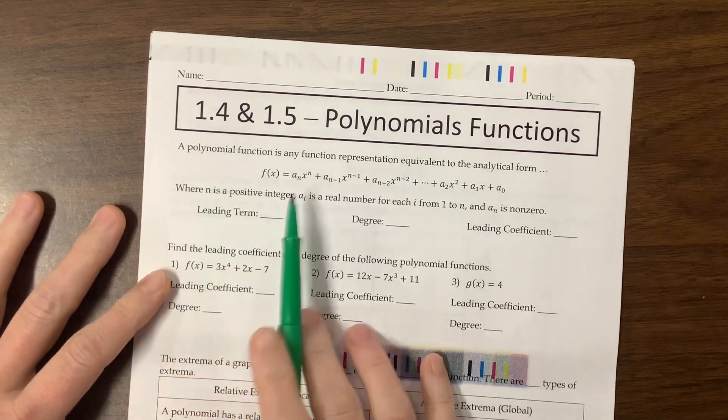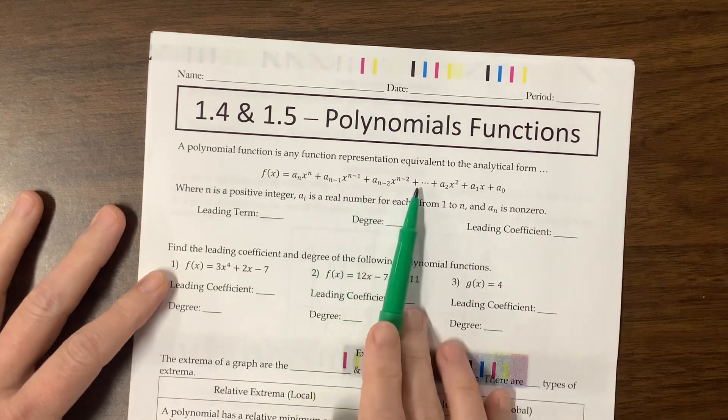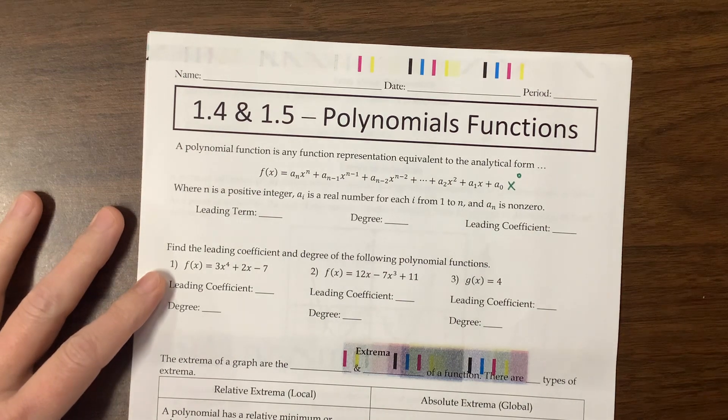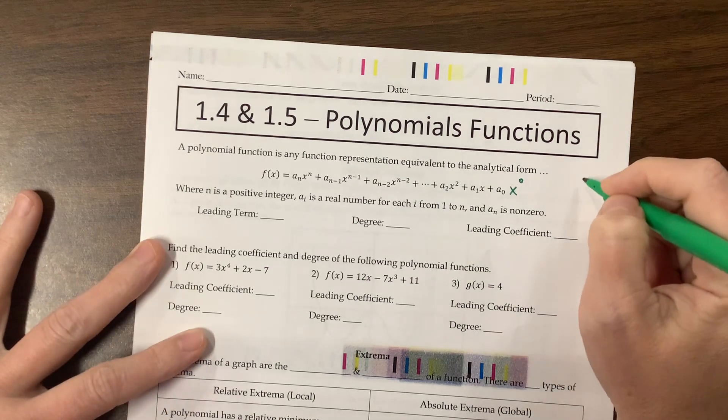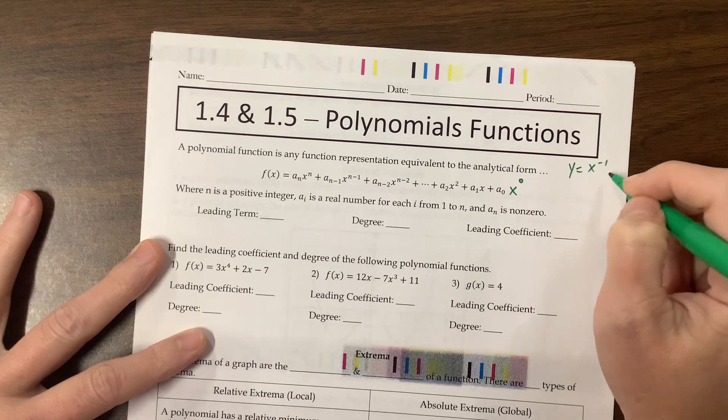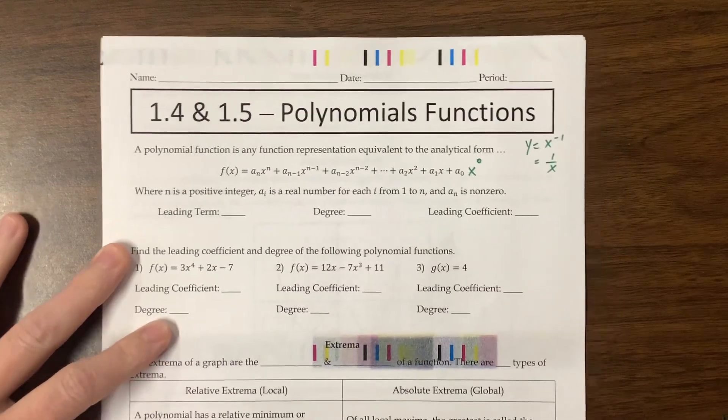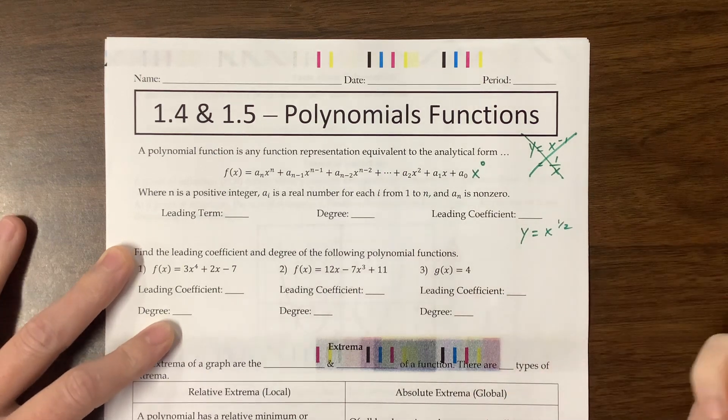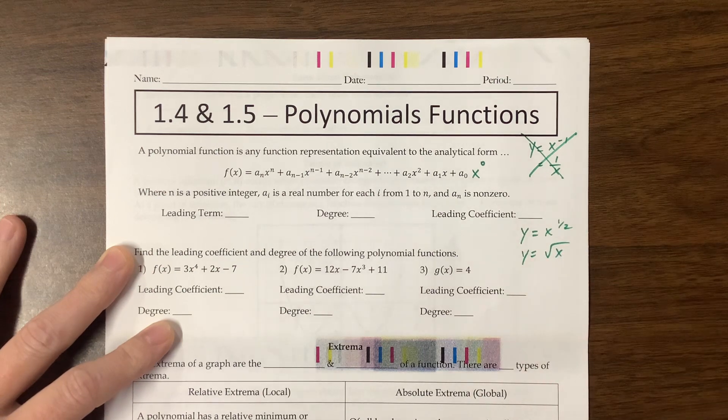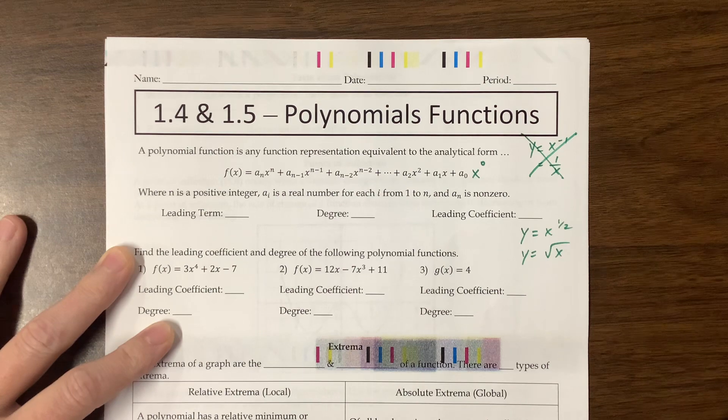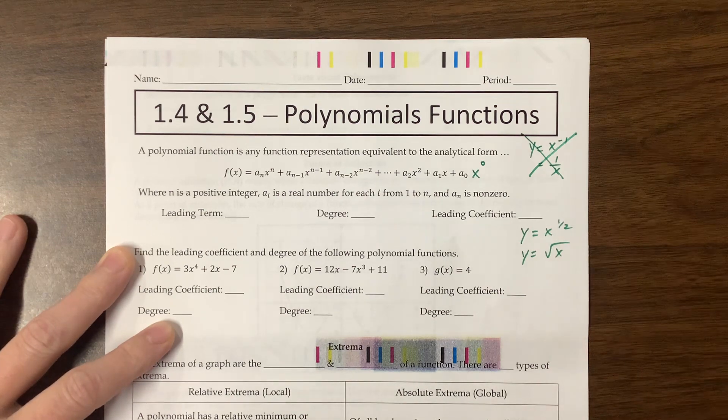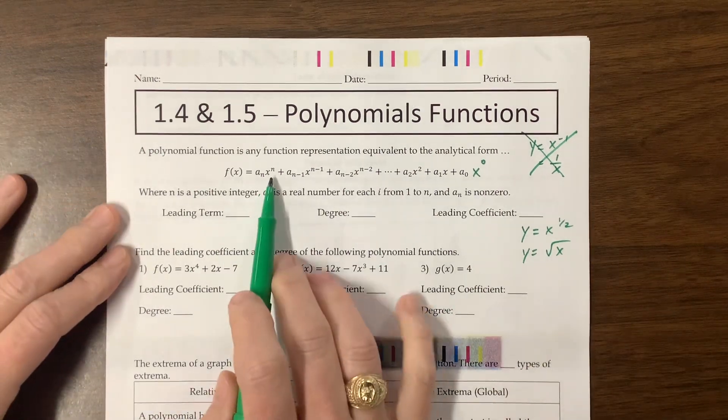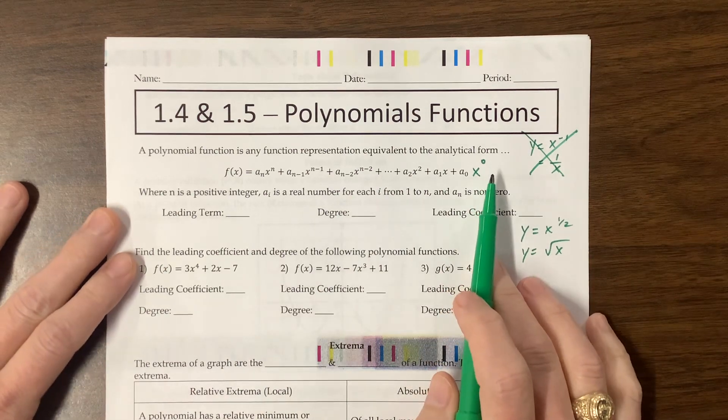So with this one, they're telling us a polynomial function. A function's a polynomial when we have x to different positive integer values, or actually this one would technically have x to the zero power, and that could be a polynomial. But we wouldn't have an x to a negative exponent, like if I said y equals x to the negative one, this is the same thing as one over x. This is a rational function, it's not a polynomial. We wouldn't have something like y equals x to the one half, for example. That is the square root of x, that's a radical. So these polynomials, all the exponents have to be positive integers or zero.